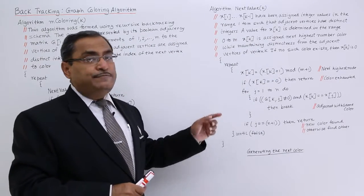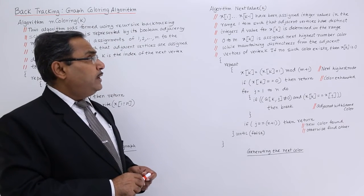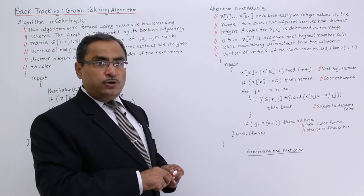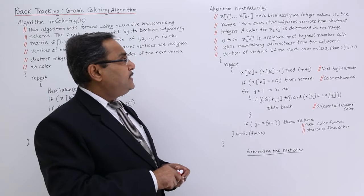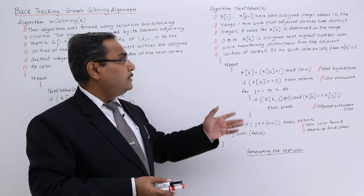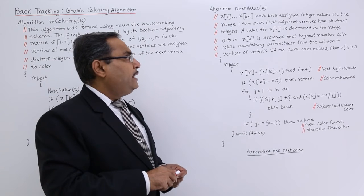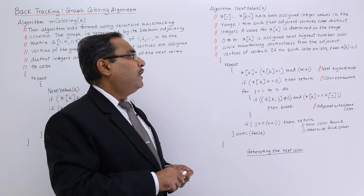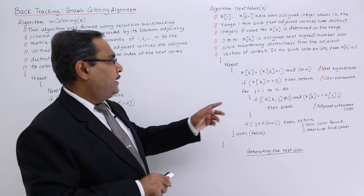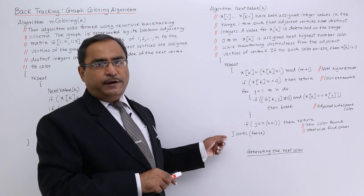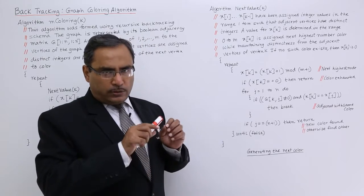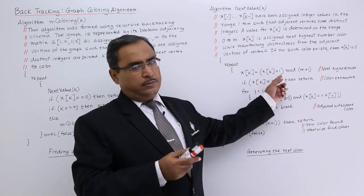Now let us go for the next_value(k) algorithm. x[1] to x[k-1], meaning the prior 1 to k-1 locations of the x array, have been assigned integer values in the range 1 to m such that adjacent vertices have distinct integers. A value for x[k] is determined in the range 0 to m. x[k] is assigned the next highest color number while maintaining distinctness from adjacent vertices of vertex k; if no such color exists, x[k] is set to 0.